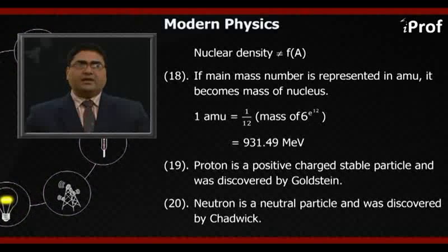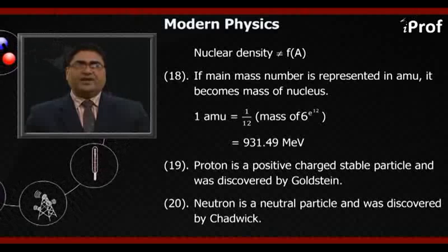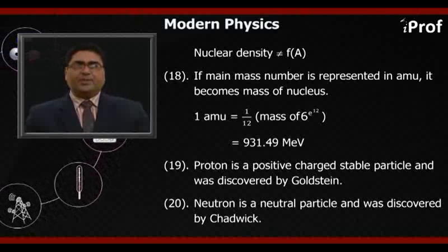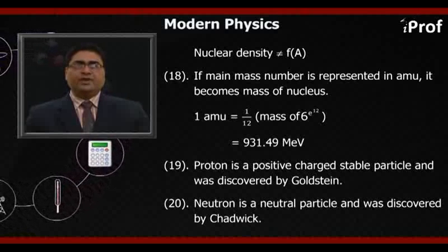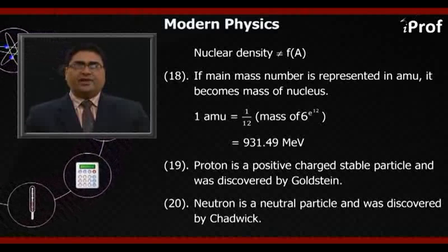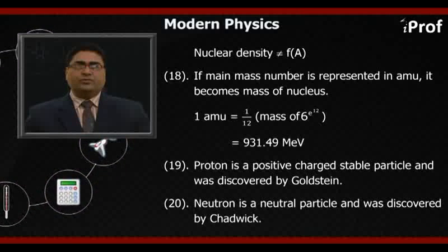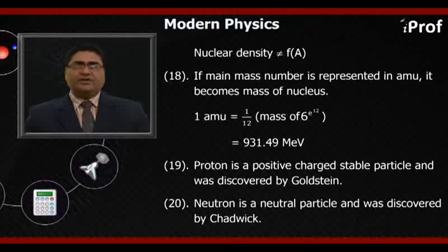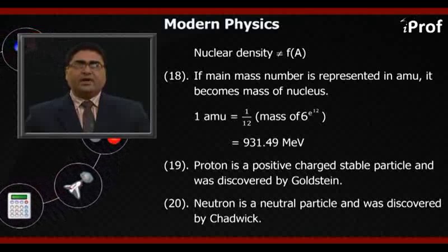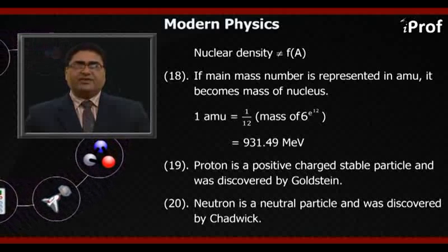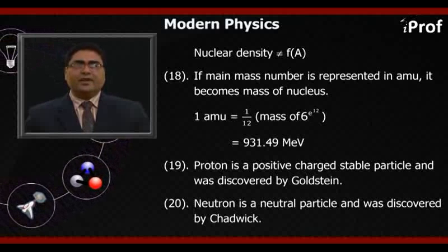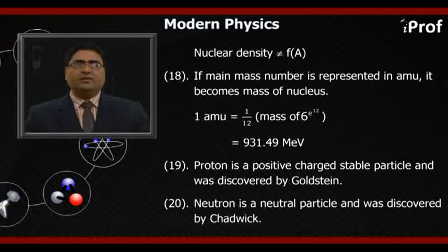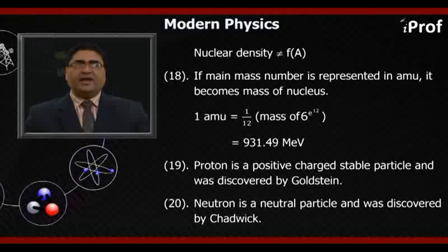Eighteenth, if mass number is represented in AMU, it becomes mass of nucleus. 1 AMU, that is 1 atomic mass unit, equals 1/12 mass of ₆C¹² atom equals 931.49 MeV.